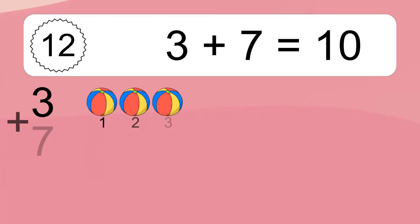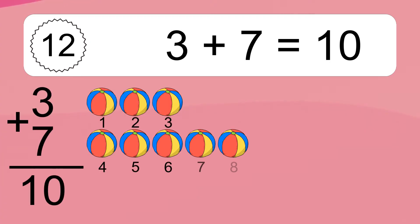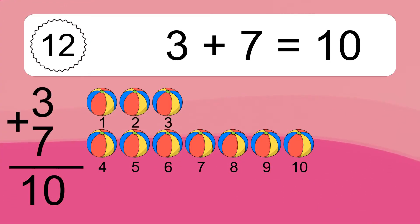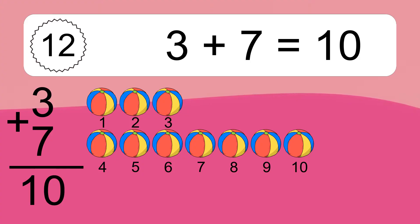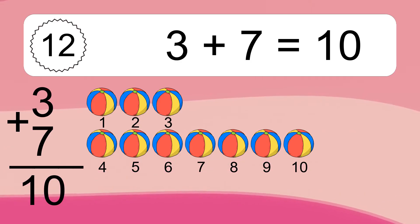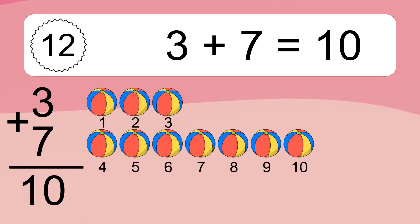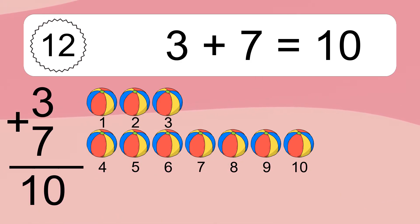3 plus 7 equals what? 3 plus 7 equals 10. Let's count it. 1, 2, 3, 4, 5, 6, 7, 8, 9, 10.